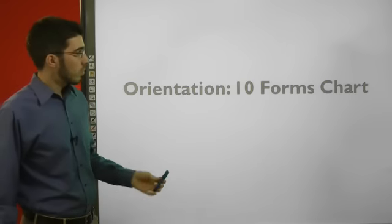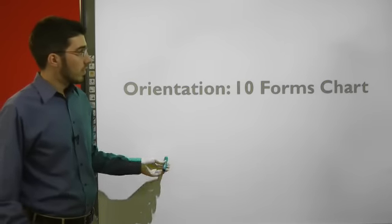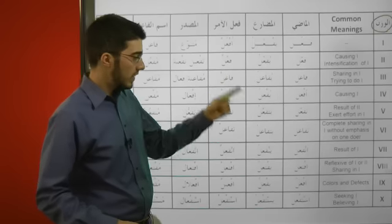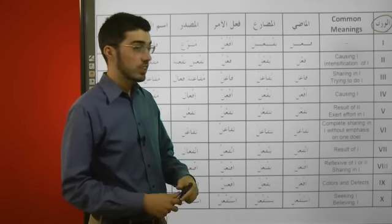We're going to move across from right to left through the column headings of this chart. And the first thing we bump into, going right to left, is this word here: el-wazin. Now what does el-wazin mean? Well, one meaning is a weight, but we don't mean that here. It can also mean a form. In this case, it's giving us the form number, because we have 1 through 10 of the Roman numeral system.